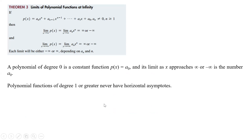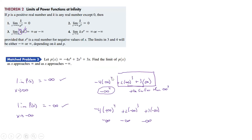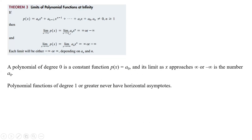Another theorem addresses polynomial functions at infinity. If P(x) equals a-sub-N times x to the N plus a-sub-(N-1) times x to the N-minus-1, down to a-sub-zero, where a-sub-N is not zero and N is greater than or equal to one, then the limit as X approaches infinity equals the limit of just that first leading term. The first term determines the behavior. It depends on what N is and what a-sub-N is to get either positive or negative infinity. For a polynomial of degree zero, you just have a constant, and the limit as X approaches positive or negative infinity is simply that constant a-sub-zero.